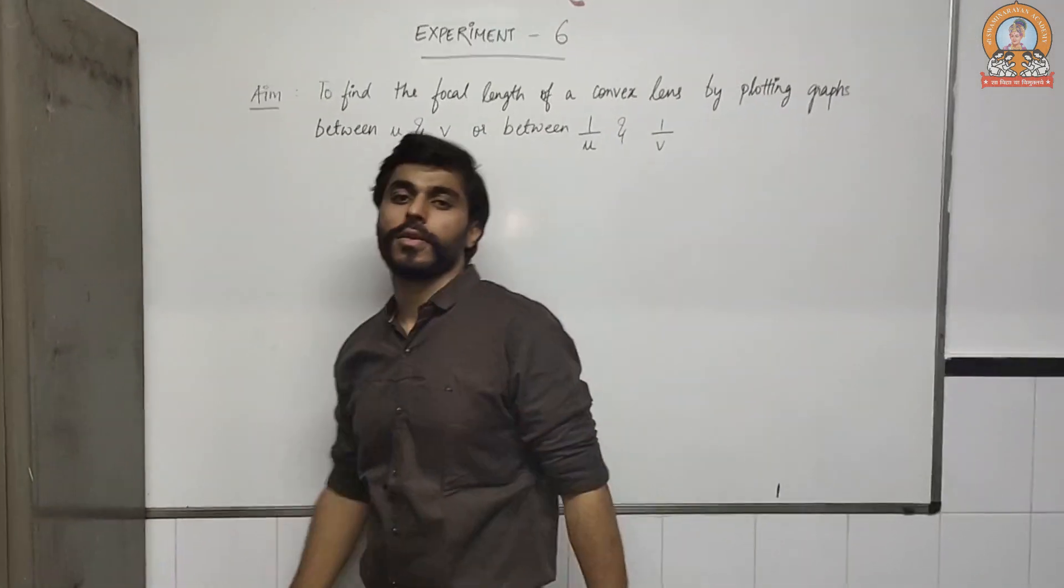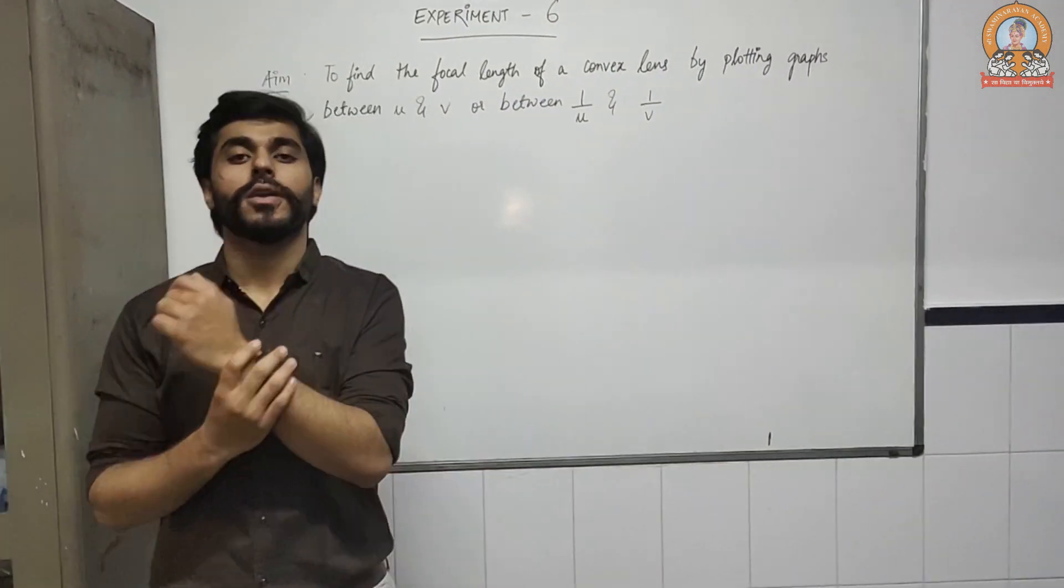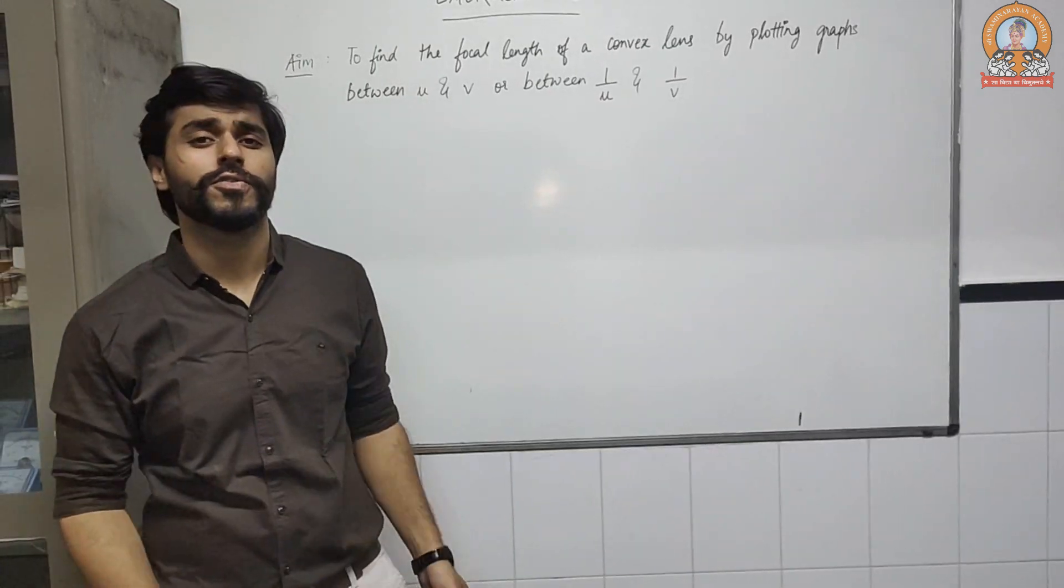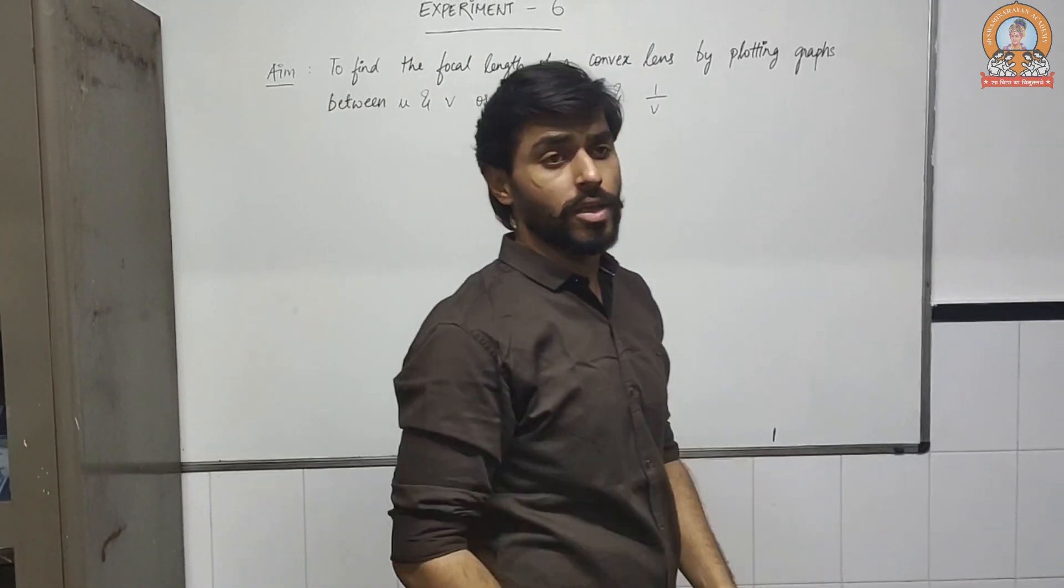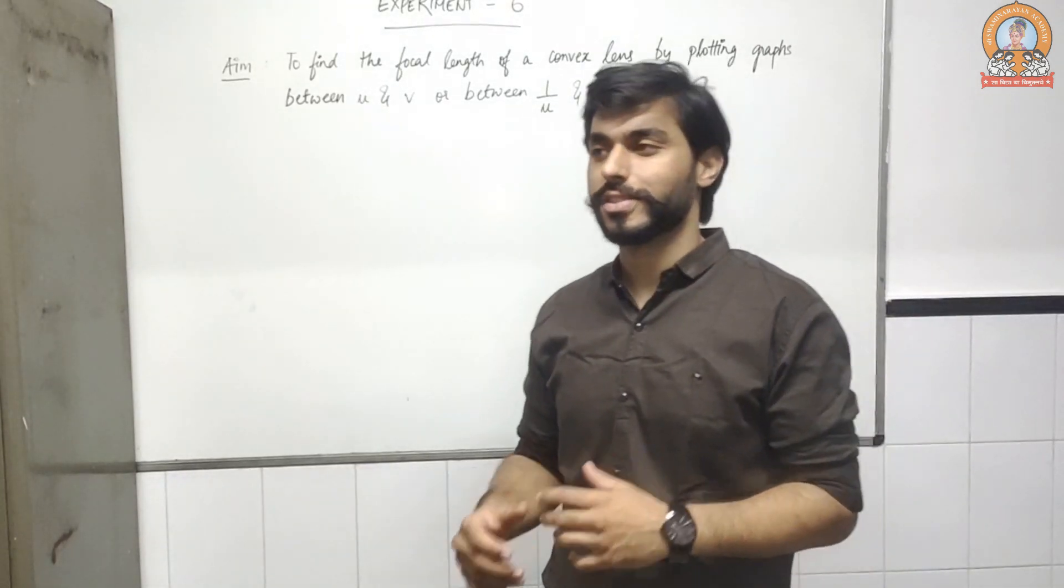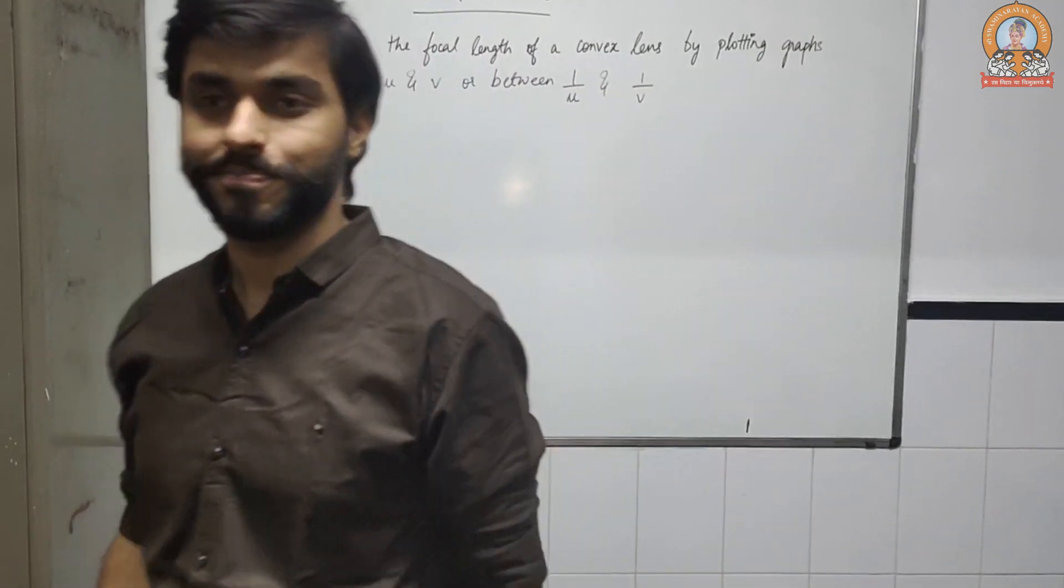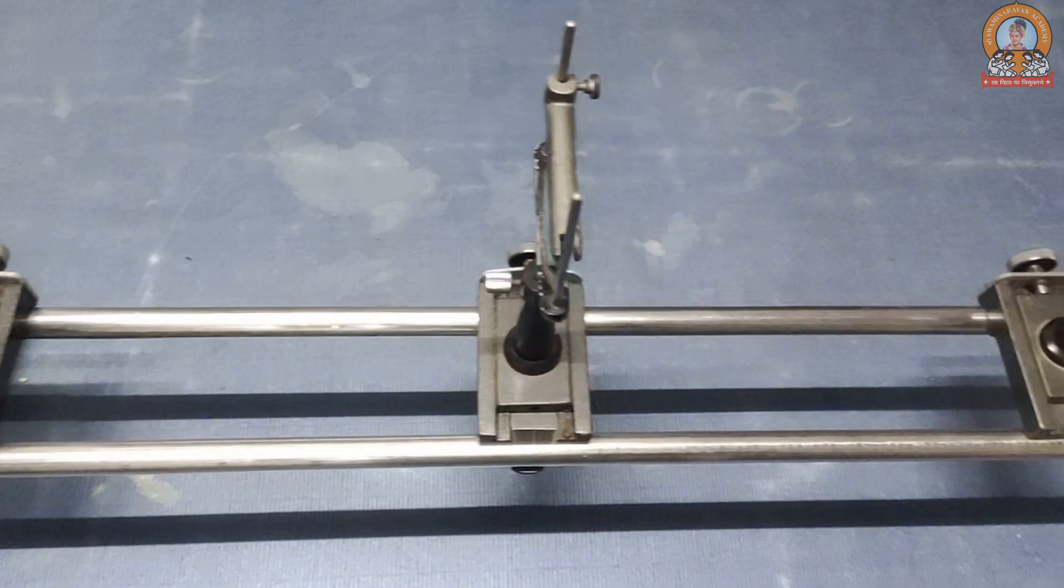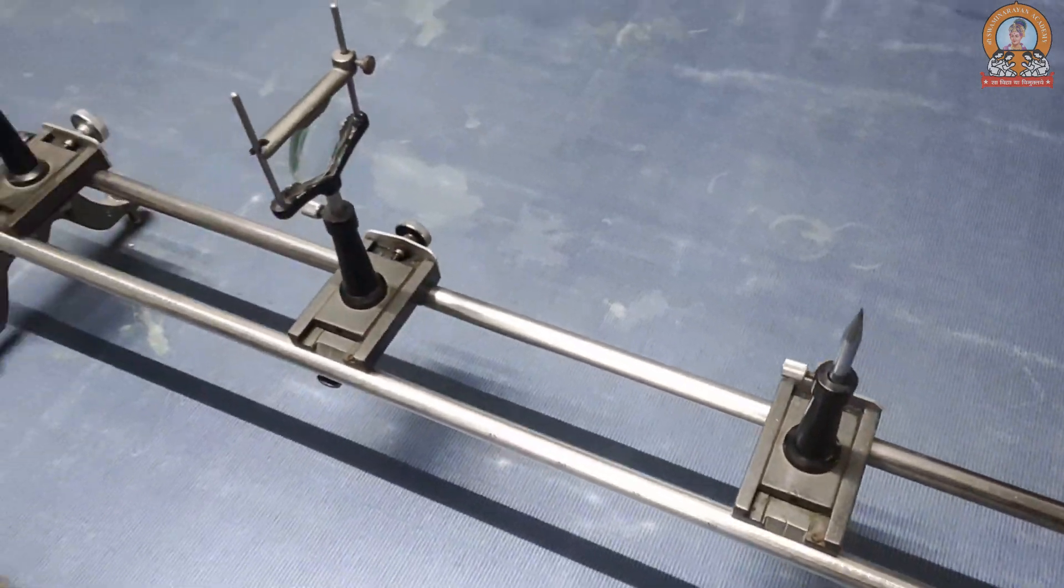Okay, good morning everyone. This is your new experiment, experiment number six. In this you will be finding the focal length of a convex lens using the optical bench. I hope you are already familiar with this experiment. This is your optical bench, I hope you are familiar with the setup.